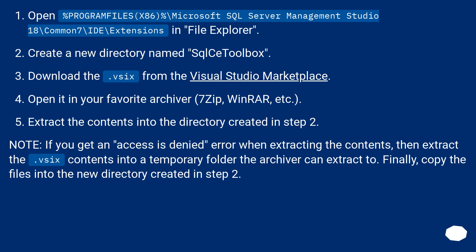Open %ProgramFiles(x86)%\Microsoft SQL Server Management Studio 18\Common7\IDE\Extensions in File Explorer. Create a new directory named SCSI Toolbox. Download the .vsix from the Visual Studio Marketplace. Open it in your favorite archiver — 7-Zip, WinRAR, etc. Extract the contents into the directory created in step 2. Note: if you get an 'Access is denied' error when extracting, then extract the .vsix contents into a temporary folder first, then copy the files into the new directory created in step 2.